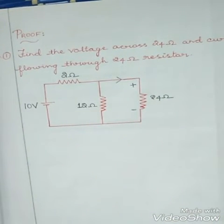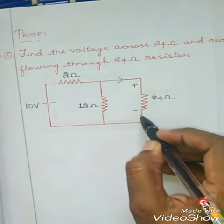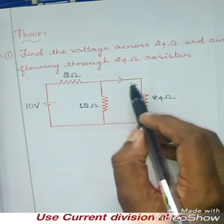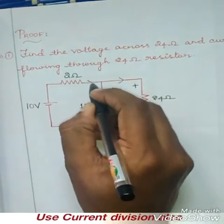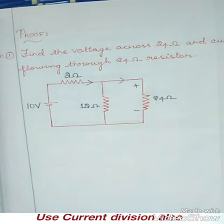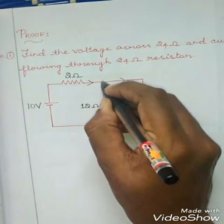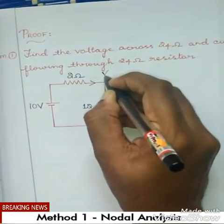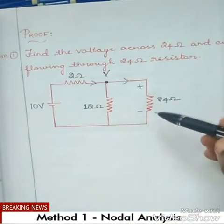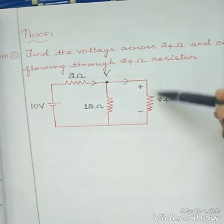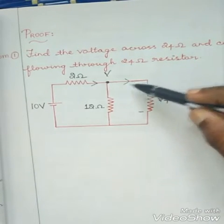First, we can focus on nodal analysis. We need to find the current through the 24 ohm resistor. You can use current division — if you find the total current, you can easily find the current through the 24 ohm resistor. Or you can use nodal analysis. There is a single major node, marked as V. Apply KCL at that node to find the voltage across the 24 ohm resistor, which is V.